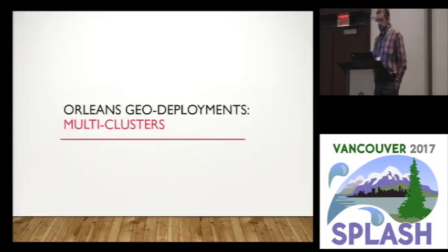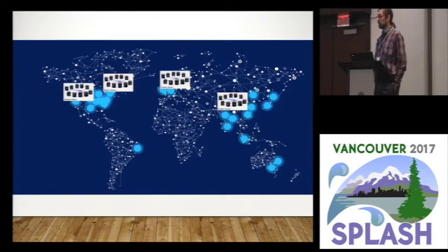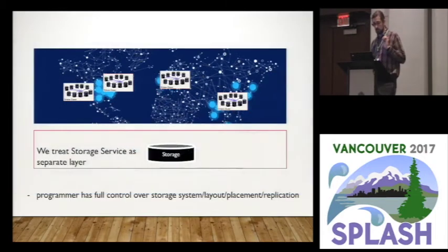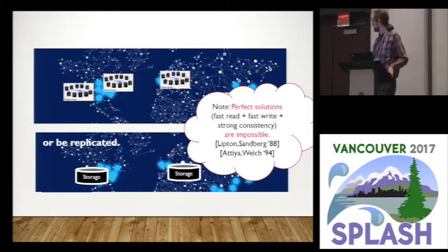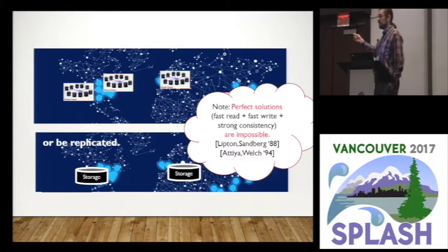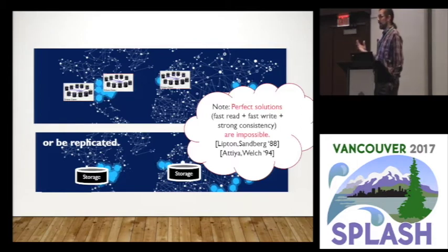Now, what do we do about the geo story? First, we deploy multiple clusters — in each data center we have a cluster of machines — and we need some story for coordinating state between those clusters. As for storage, we treat it as a separate layer. The programmer can put storage in one place or two places. It's important to know that perfect consistency is impossible — there's a quantitative version of the CAP theorem: you can't read and write with strong consistency without paying a round-trip time between nodes at some point.